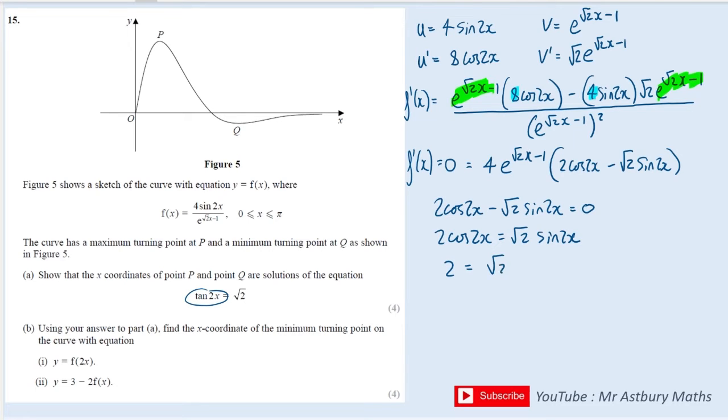So I get root 2 sine over cos is equal to tan, so that would be tan 2x. And dividing through by root 2 gives me this, and 2 over root 2 is the same as root 2. And I have that tan 2x is equal to root 2.